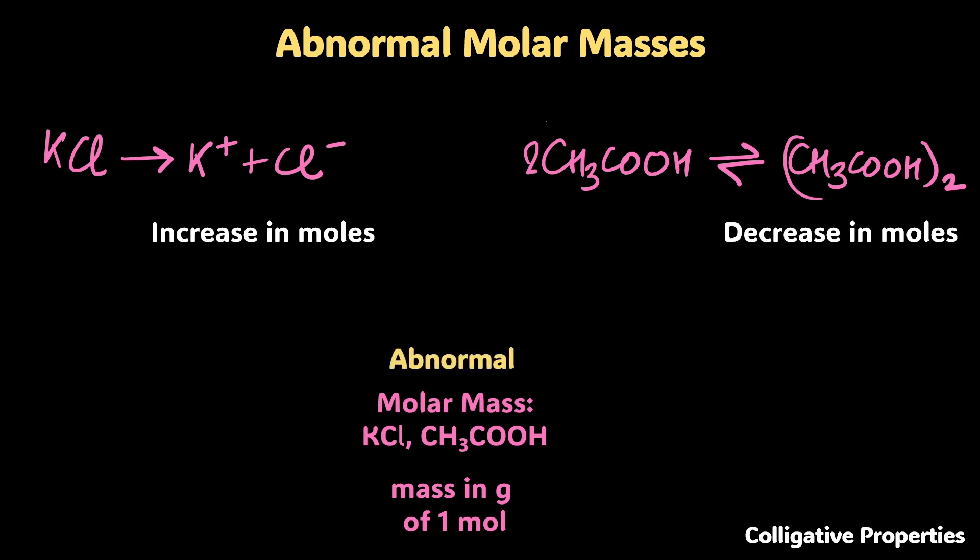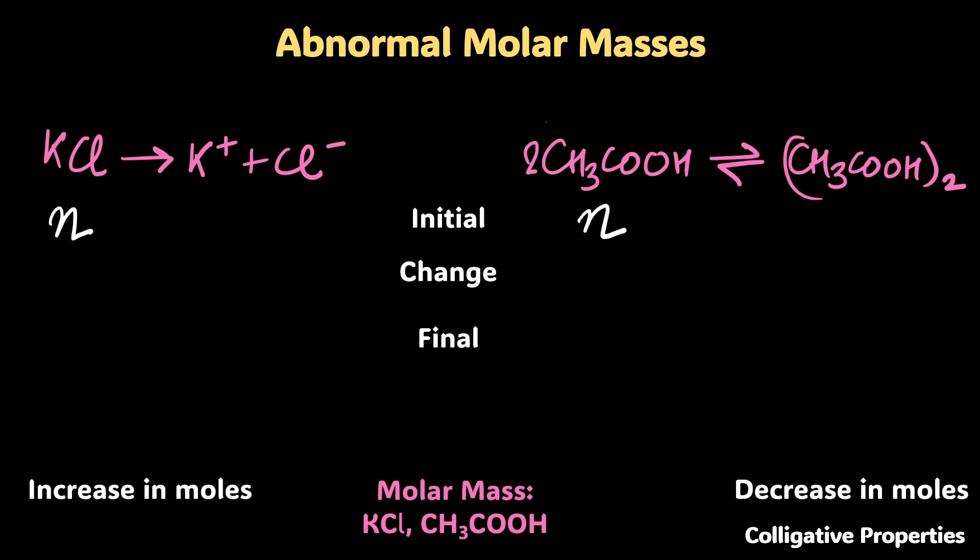We can figure this out. Do the whole equilibrium setup. If you start with n moles initially, what is the change and what is the final number of moles? We're just going to run through the motions. Left-hand side first: there's a change. Assume that it dissociates completely, so if you put n moles, all of it dissociates and gives you n moles of K⁺ and Cl⁻ ions. The final moles now is 2n. Clearly, you're going from n to 2n. This one's easy.